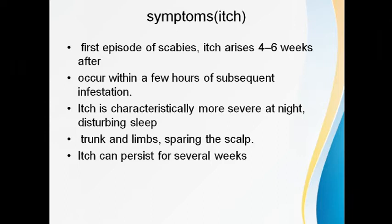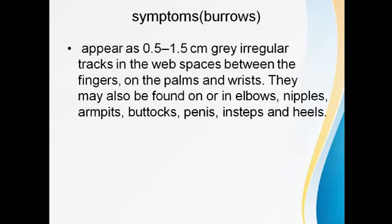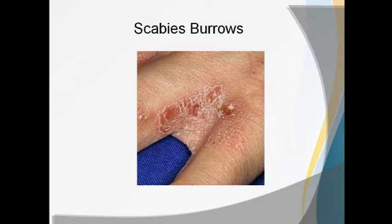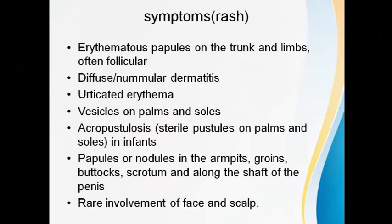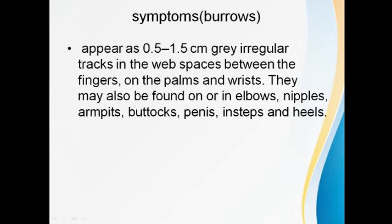Even if the mite dies due to treatment, it remains in the skin until shed by the body, and the hypersensitivity reaction keeps the itching present. The second characteristic lesion is burrows — irregular tracts of 0.5 to 1.5 centimeters in the web spaces. Burrows are present over flexural parts like armpits, buttocks, web spaces of fingers, heels, the penis, and around the umbilicus. The burrow track is serpentine or snail-like, not straight.